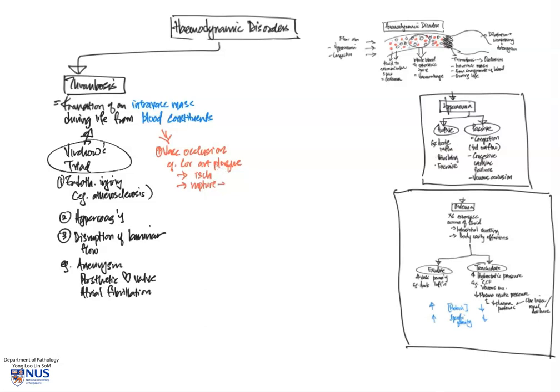This will already give rise to some narrowing of the vessel and perhaps some ischemia in the downstream myocardium. However, this plaque can also rupture, and this will result in endothelial injury and give rise to thrombosis, further the obstructive process to potentially occlude the entire lumen of the vessel. And this can give rise to acute myocardial infarction.